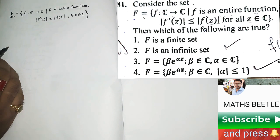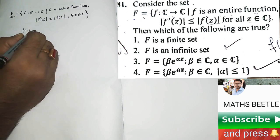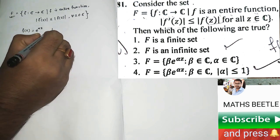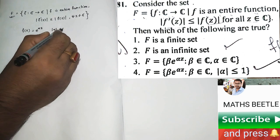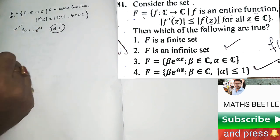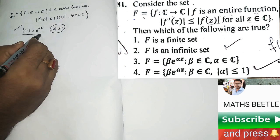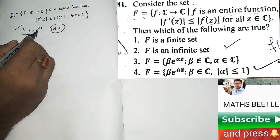They have given us whether F is finite or infinite. You have to decide that. For that purpose, simply take F(z) equals e to the power alpha z, where mod of alpha less or equal to 1. This example which we are just taking. Now immediately it is clear that this F(z) is an entire function.